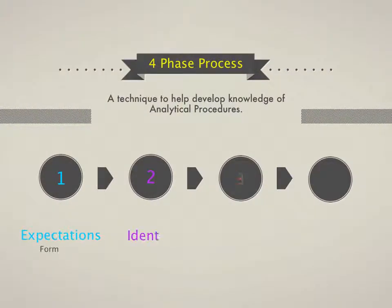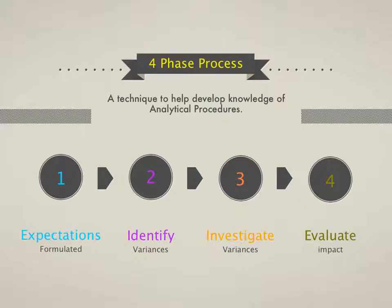There's a four-phase process. Phase 1: formulate expectations — for example, if sales double, I would expect cost of sales to double. Phase 2: identify the variances — we expected cost of sales to be 800 but they were 1000, a 200 difference. Phase 3: investigate those differences — go and look at why there's a 200 difference, speak to management, get evidence, do some testing. Then finally, Phase 4: evaluate the impact.